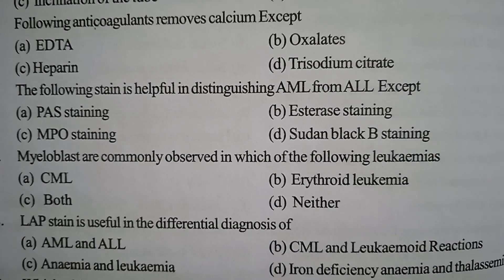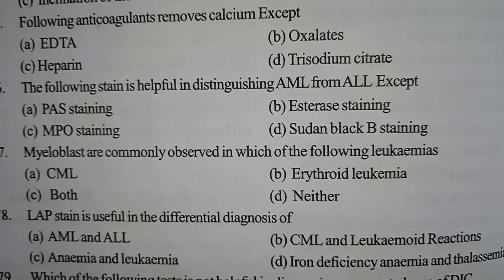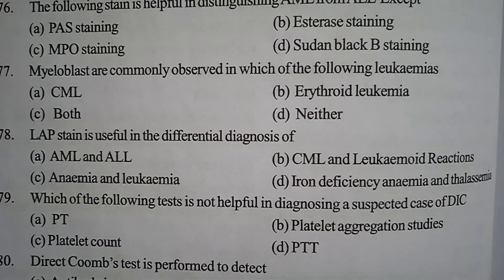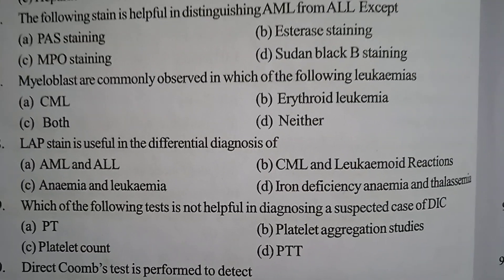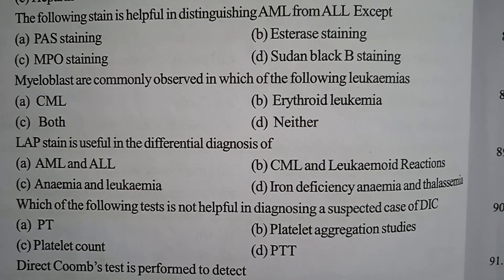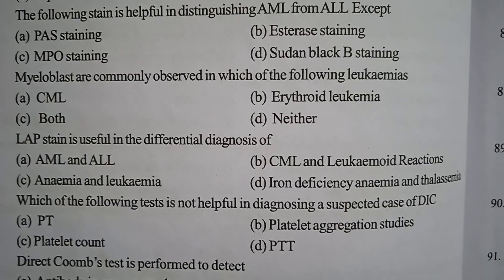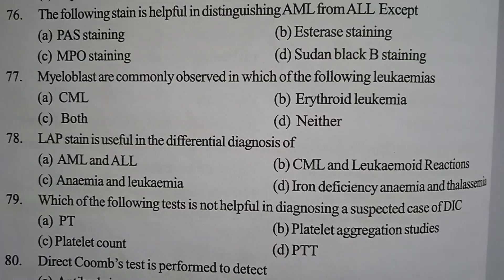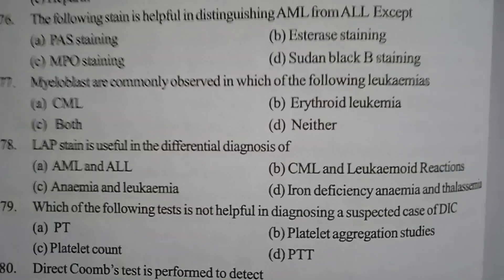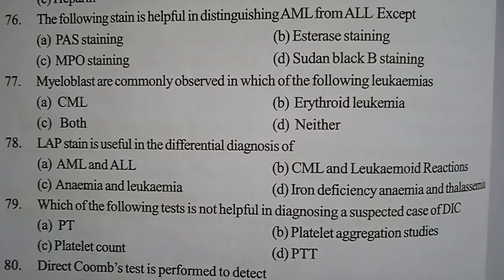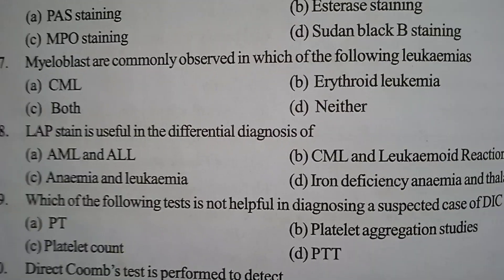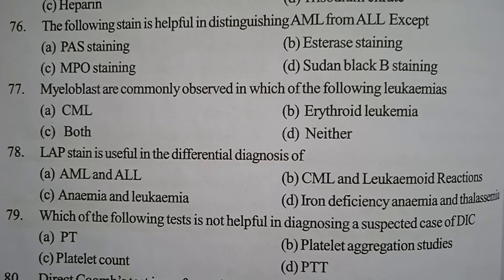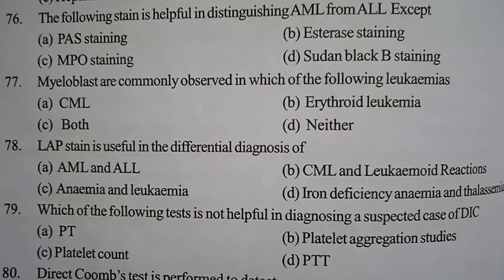Next one: LAP stain is useful in the differential diagnosis of? Option A: AML and ALL. Option B: CML and leukemoid reactions. Option C: anemia and leukemia. Option D: iron deficiency anemia and thalassemia. Correct answer: option B, CML and leukemoid reactions.